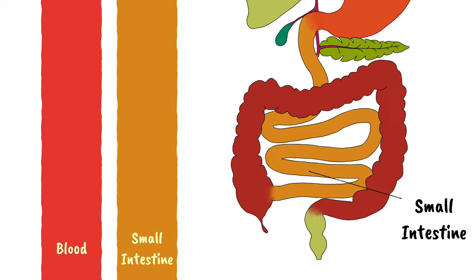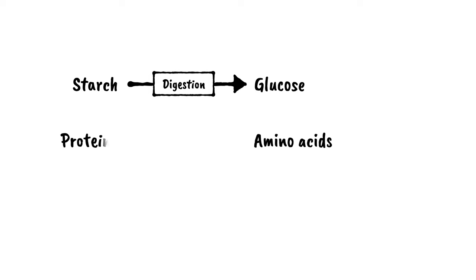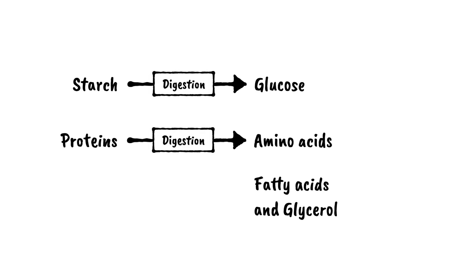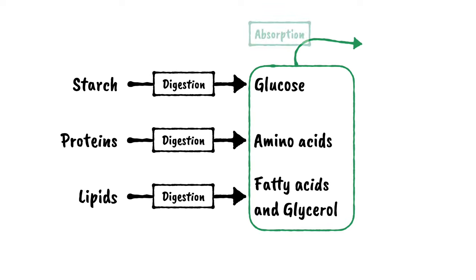The digested food in the small intestine contains molecules such as glucose from the digestion of starch, amino acids from proteins, fatty acids and glycerol from lipids, as well as lots of other essential materials. These must be absorbed into the bloodstream so that your body can use them.